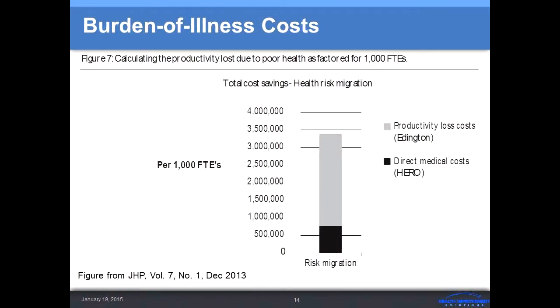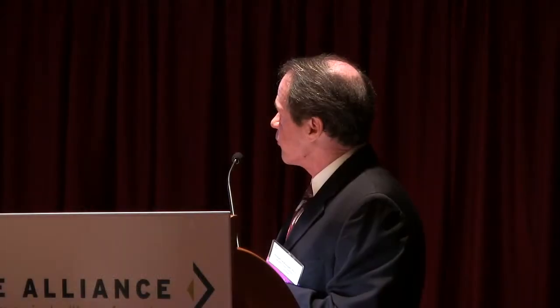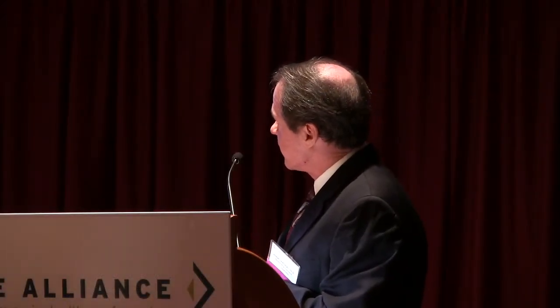This data is from the Integrated Benefits Institute database. We're putting together a module training program for practitioners, and we took the database and broke it down to 1,000 employees. The basic message is that when you look at medical costs versus productivity, it shows about that three-to-five difference between medical and productivity costs.